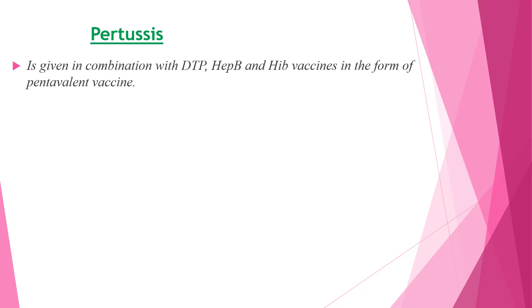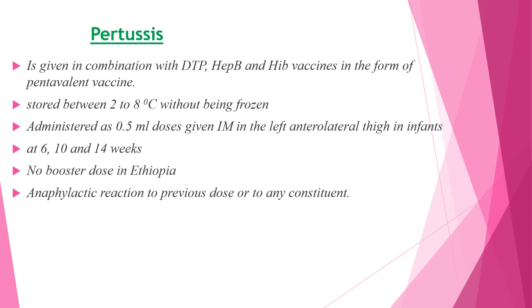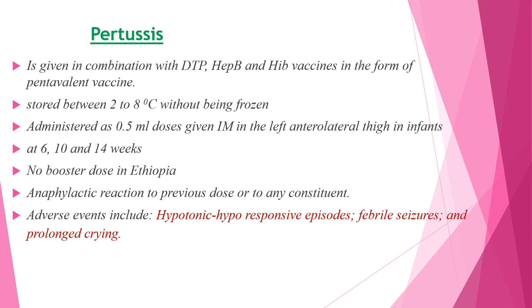Pertussis is given in combination with DPT, hepatitis B, and Hemophilus influenzae type b in the form of pentavalent vaccine. It is stored between two to eight degrees Celsius without being frozen and administered as 0.5 ml IM in the left anterolateral thigh. It is given at 6, 10, and 14 weeks, with no booster doses available in our country. Anaphylactic reaction to a previous dose or any constituent is a contraindication. Adverse events include hypotonic-hyporesponsive episodes, febrile seizures, and prolonged crying, which are rare, approximately one in a million.